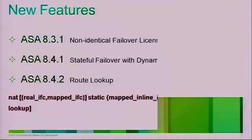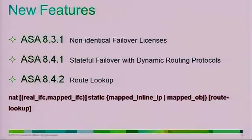Version 8.3 has a new failover license feature. Starting from 8.3.1, both ASA failover units no longer need to have the same license keys. Even if there is a mismatch, the ASA will combine the licenses. This means you do not have to purchase another license for your standby unit — a great relief for customers.